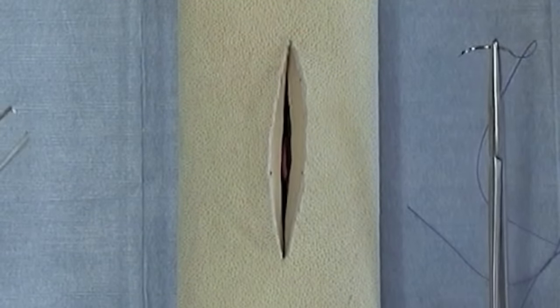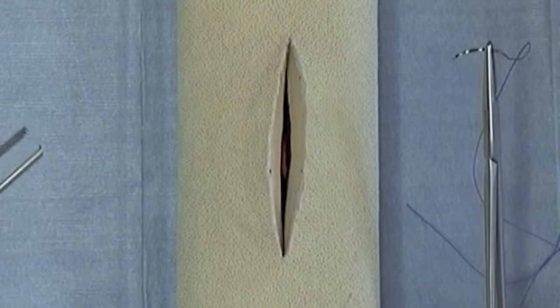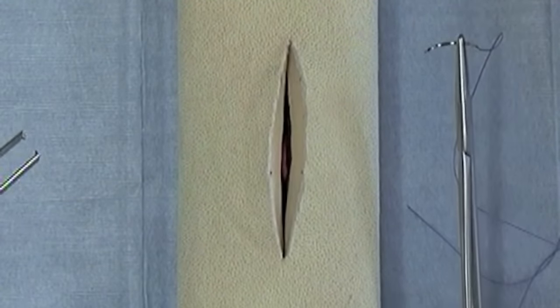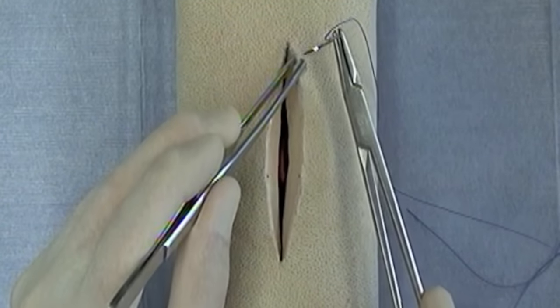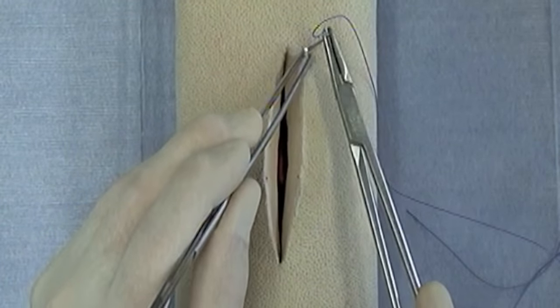The simple continuous suture pattern is one of the most common suture patterns you'll be using in practice, along with the simple interrupted pattern. To begin a simple continuous pattern, you simply perform a simple interrupted suture: full thickness bite, full thickness bite.